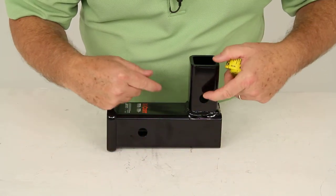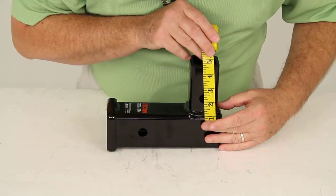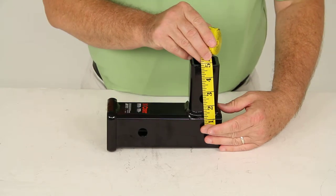The drop from the center of this hitch pin hole to the center of this hitch pin hole is right at two and seven-sixteenths inches.